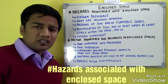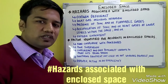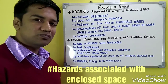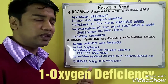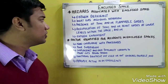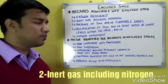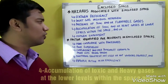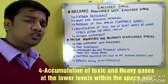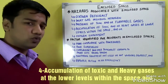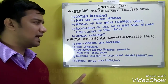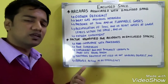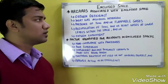The next topic is what are the hazards associated with enclosed spaces. The hazards are as follows: Number 1, oxygen deficiency. Number 2, inert gas including nitrogen. Number 3, presence of toxic and flammable gases. Number 4, accumulation of toxic and heavy gases at the lower levels within the space. Number 5, oxygen enrichment.